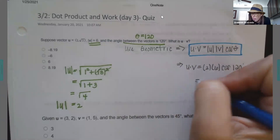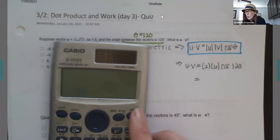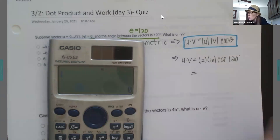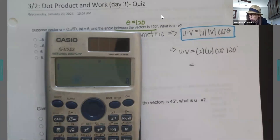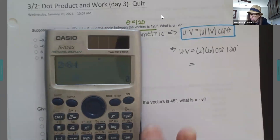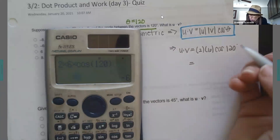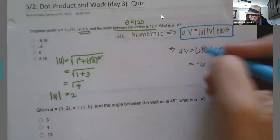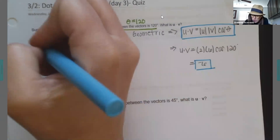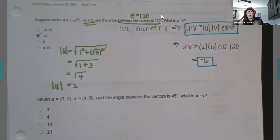To find the magnitude of u, it's the square root — I square the first term and add it to the square of the second term. So it's the square root of 1 plus the square root of 3 squared, which is just 3, giving me the square root of 4, which is 2. So my magnitude of u is 2. Plugging everything into the formula: u dot v equals 2 times 6 times cosine of 120 degrees, which gives me negative 6. The dot product is always a scalar — a single real number.